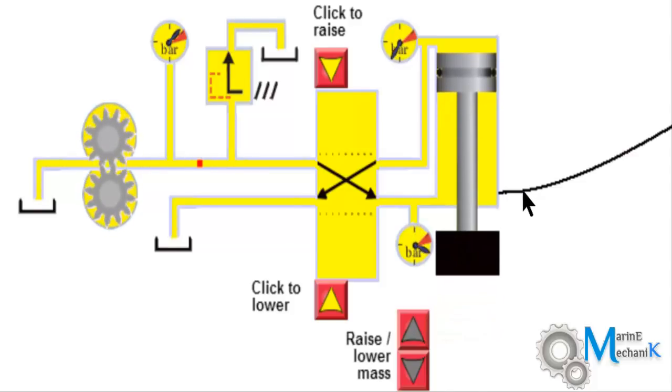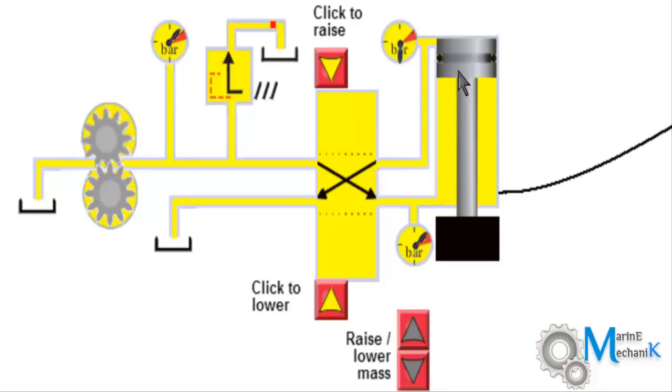And the time taken to lift the piston up is more than what it was in lighter loads. Again after lifting up to the topmost position the pressure reaches maximum which is same as the line pressure, and then the safety valve lifts and relieves the excess oil.